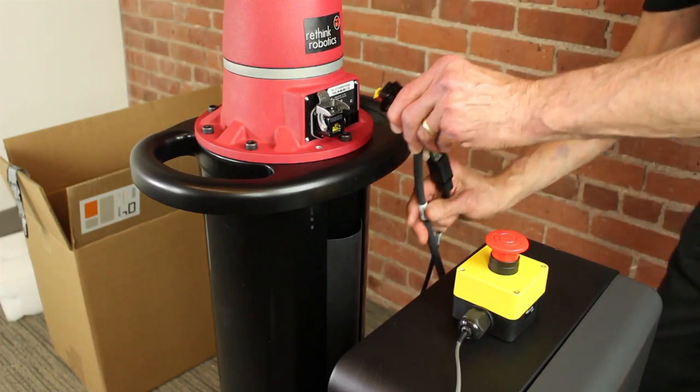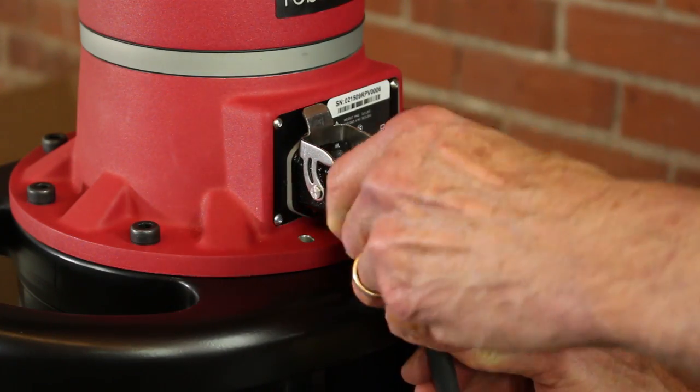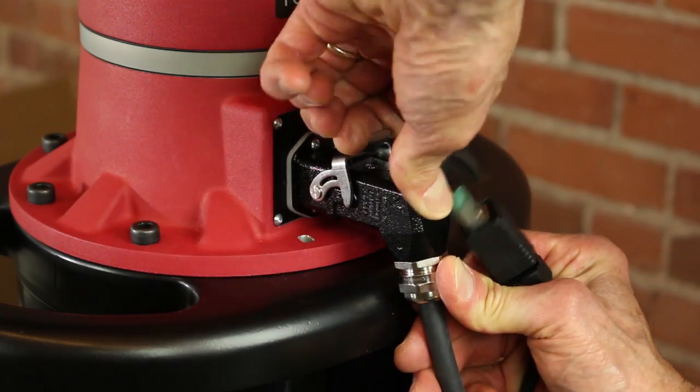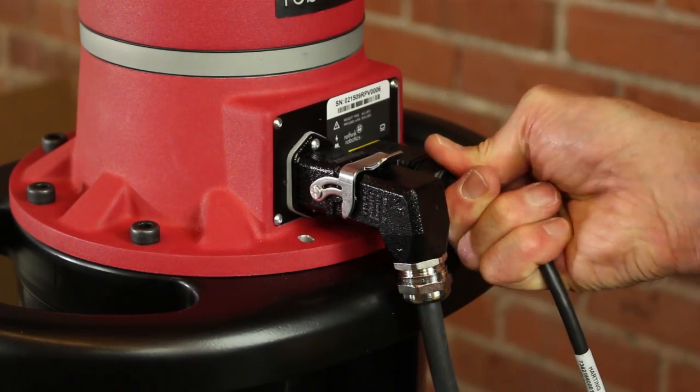Connect the controller cable to the base of the arm and secure with the retaining clip. Plug in the display cable and listen for the snap.